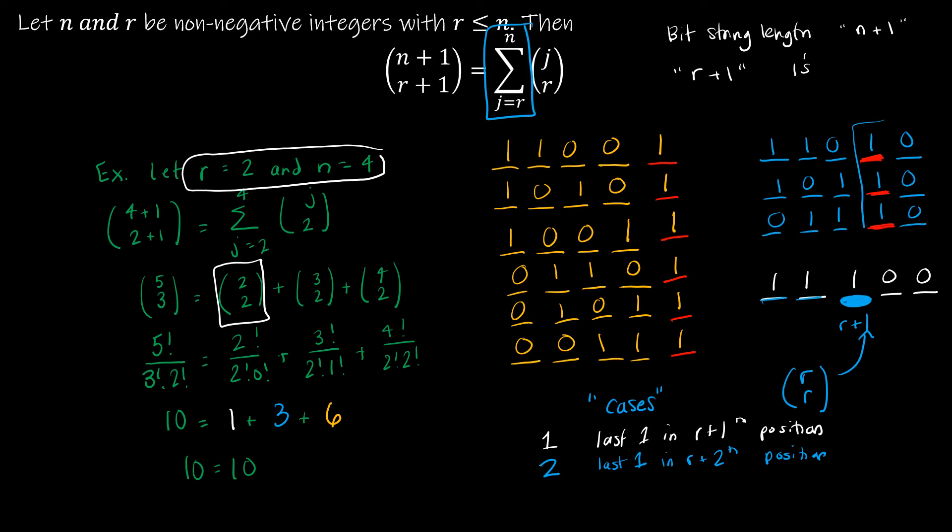Again, denoted in red. So how can I denote that? So if this was r choose r, then this is I have r plus 1 spaces left and r.